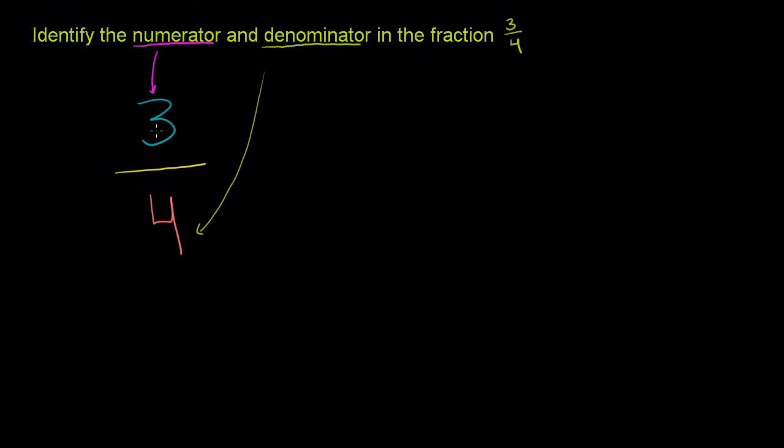So if they say, what's the numerator? 3. What's the denominator? It's 4, just the number on the bottom. They could have just called this the number on the bottom. They could have just called this the number on top.